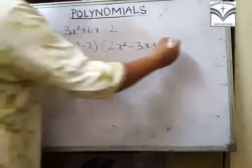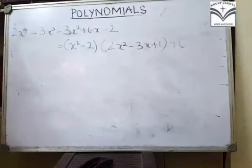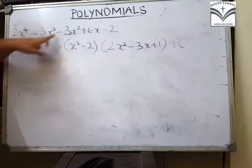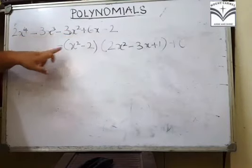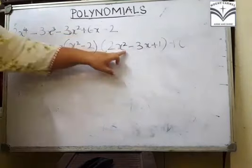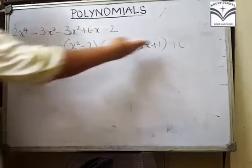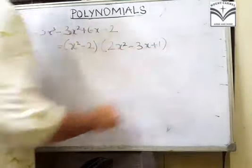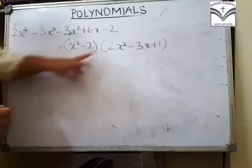Plus, of course, remainder jo ki 0 hai. Right, aapka division algorithm: aapka dividend is equal to divisor into quotient plus remainder. Remainder 0 hai, isliye isko likhne ki zarurat nahi hai.